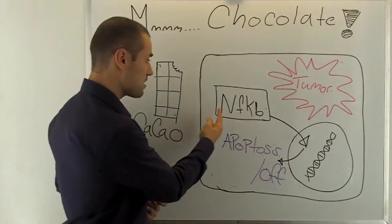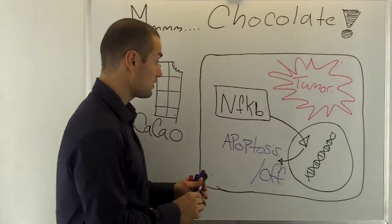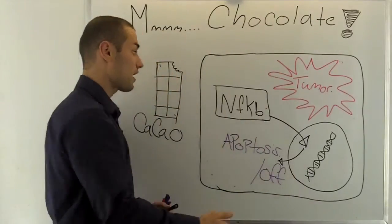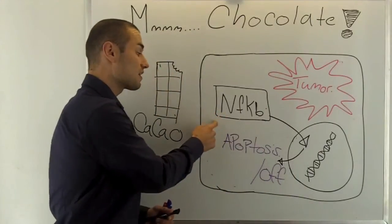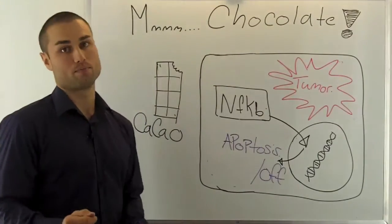But if nuclear factor kappa beta is over activated it will start sending signals to your nucleus to say listen everything's okay. So this being over activated is not good for us. And this is where chocolate comes into play.